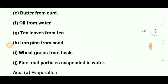Next is wheat grains from husk. Wheat grains can be separated from husk using air — when we introduce air at high speed, the husk, which has very low weight and low density, gets separated because it is easily carried away by air.